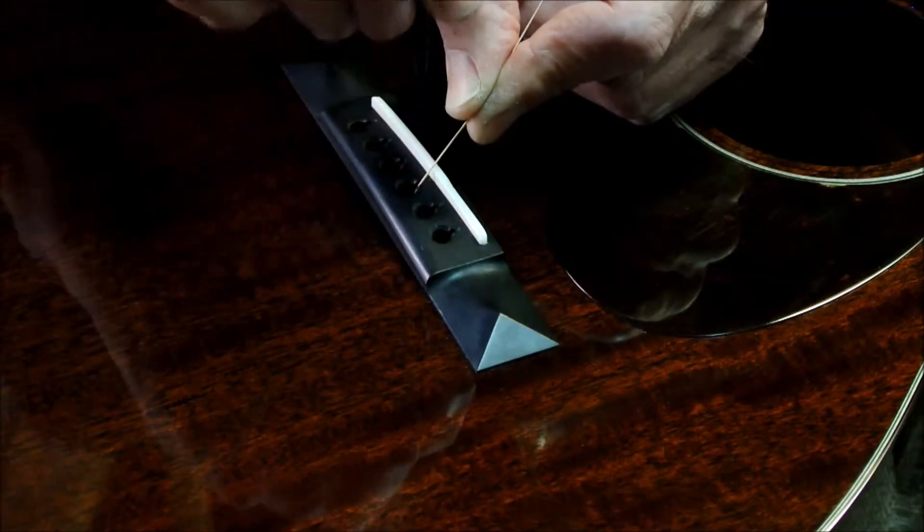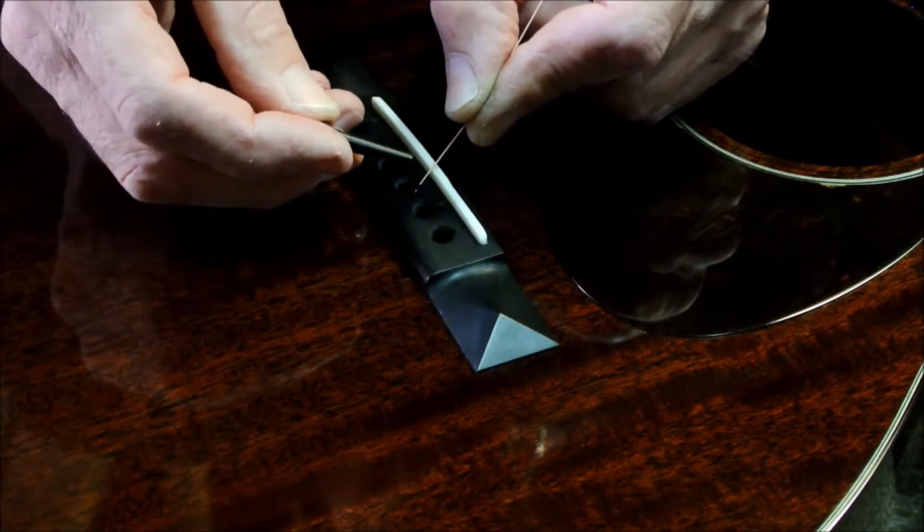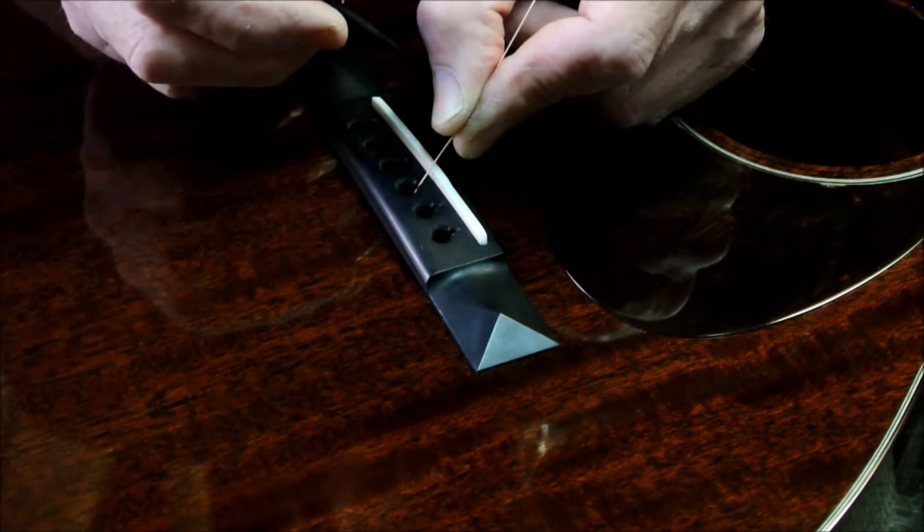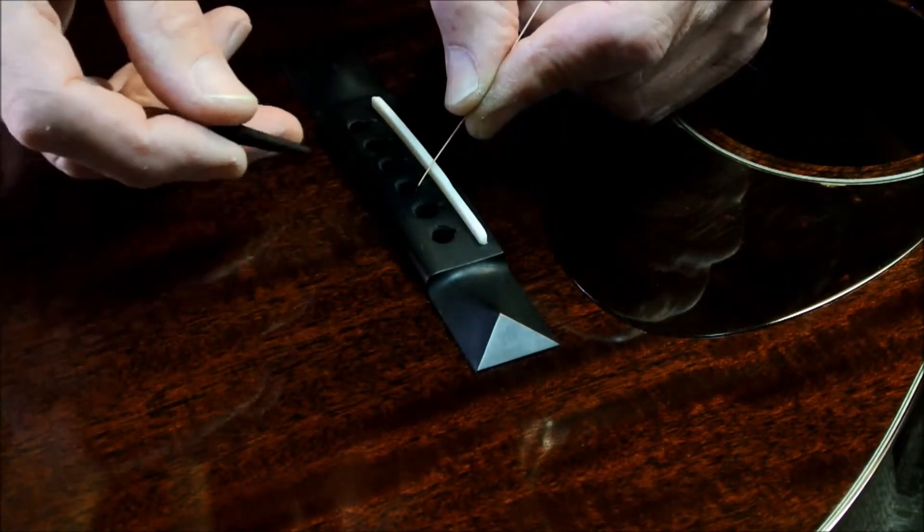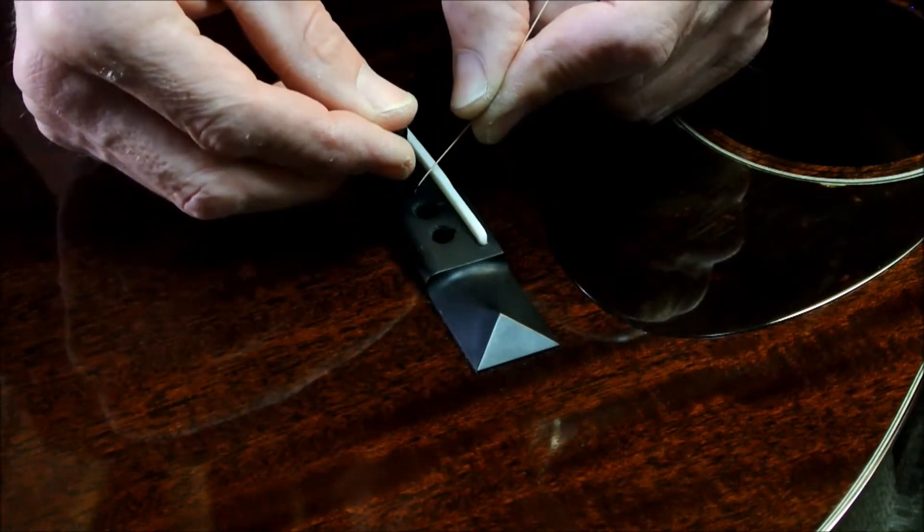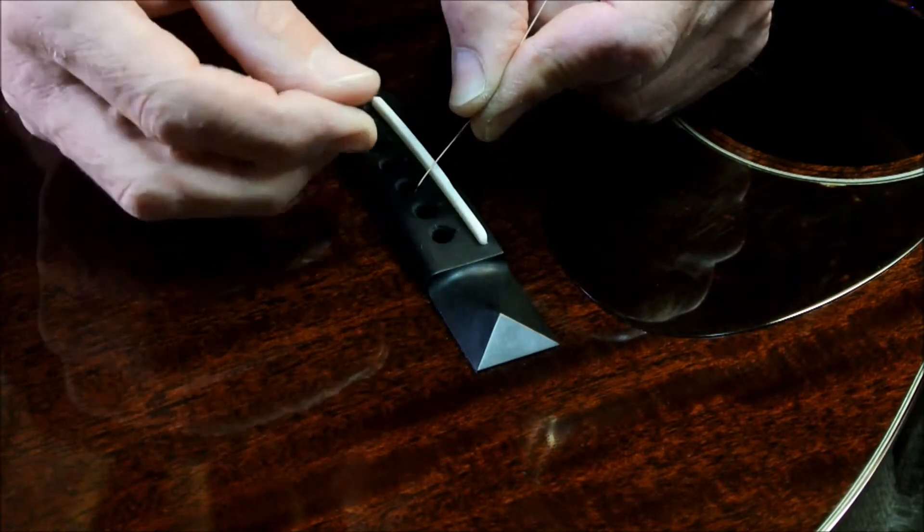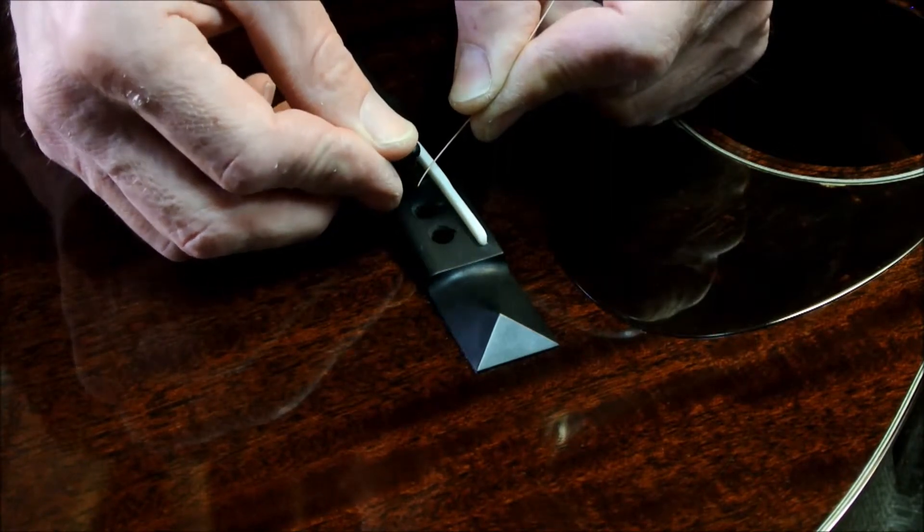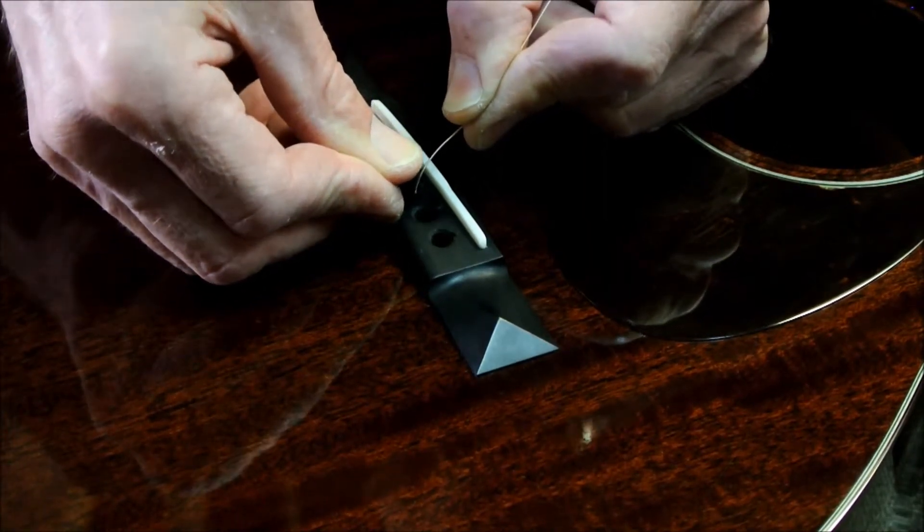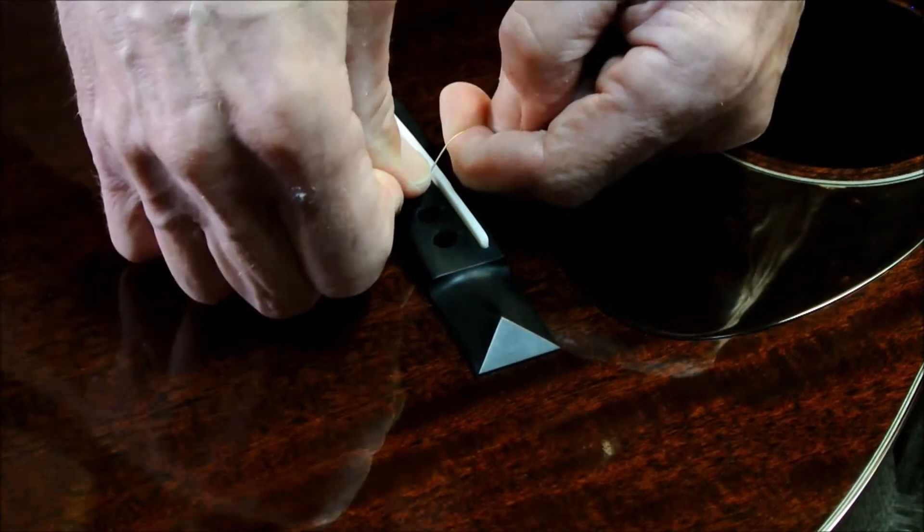So here we go. I've got the ball end pulled up where it's just contacting the bridge plate underneath the bridge. Bridge pin's going in, and I'm holding the string as I do it so that it stays in its position. And as I'm pushing this down, I'll pull on here and I make sure everything's in really nice and snug.